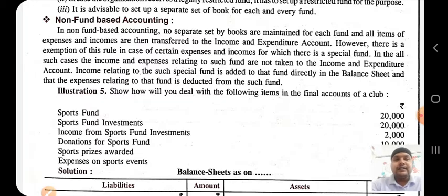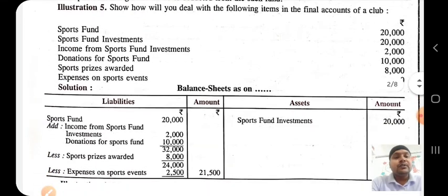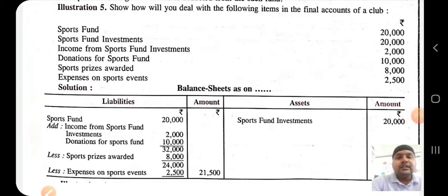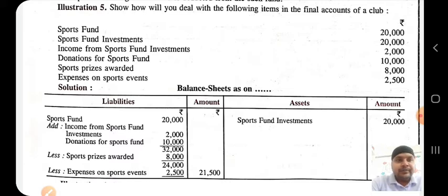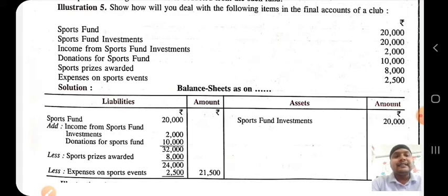Now let us move to Illustration 5 to better understand this concept. How will you deal with the following items in the final accounts of a club? The items are: sports fund 20,000; sports fund investment 20,000; income from sports fund investment 2,000; donation for sports fund 10,000; sports prizes awarded 8,000; and expenses on sports events 2,500. Sports fund is a liability, so it will be shown on the liability side of the balance sheet. Sports fund investment is an asset, shown on the asset side.